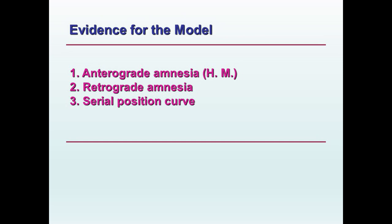Retrograde amnesia also provides evidence for the three storage model. Retrograde amnesia occurs typically when there's a blow to the head, perhaps momentary unconsciousness. When the person comes to, they do not remember what occurred before the accident. But most of those memories will come back, beginning with memories farthest back in time, until there's a small window of time right before the accident that the individual will never remember. This too suggests that short-term memory and long-term memory are two separate and distinct processes.